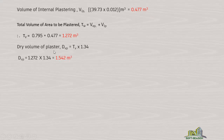The dry volume of plaster equals the total volume to be plastered multiplied by 1.34. This factor of 1.34 accounts for the dry volume conversion for plaster. Feeding in 1.272 as the total volume, we get the dry volume of plaster to be 1.542 cubic meters.